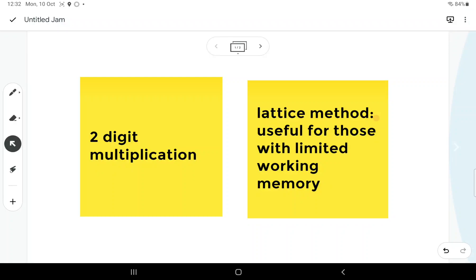All right, two-digit multiplication using the lattice method. This method is particularly useful for those with limited working memory as it's a process that is very step-by-step, and you can stop at any moment and still return back to where you were without getting confused.